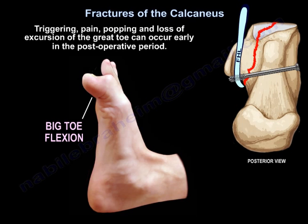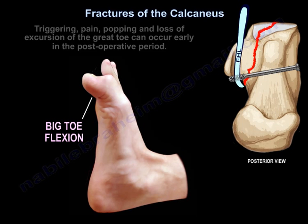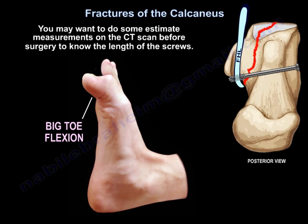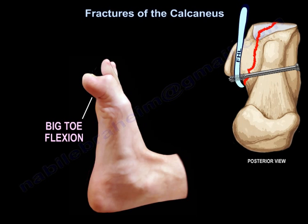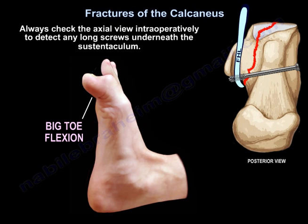Triggering, pain, popping, and loss of excursion of the great toe can occur early in the postoperative period. You may want to do some estimate measurements on the CT scan before surgery to know the length of the screws, and always check the axial view intraoperatively to detect any long screws underneath the sustentaculum.